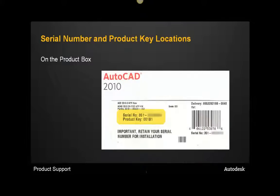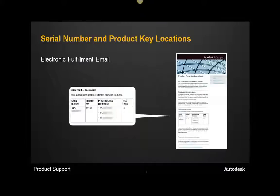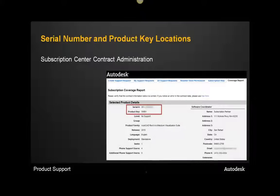The first place you can find this information is on the back cover of the media package — here you'll see the serial number and product key, with the serial number blurred out. If you downloaded the product as part of electronic fulfillment, you should have received an email containing the serial number and product key. Finally, if you're a subscription customer, you should be able to log into the Subscription Center as a contract administrator to find your serial number and product key.